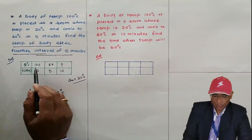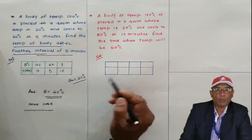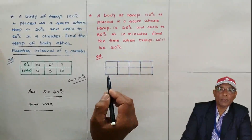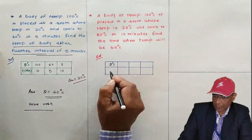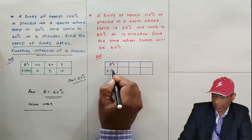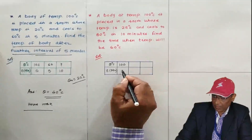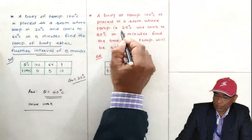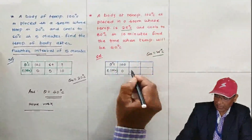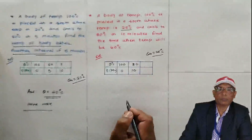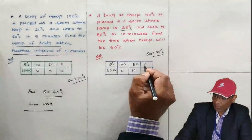This is essentially the same type of problem — in examinations, the numbers may change. In previous problems we found temperature; now in this next problem we are going to find the time. A body at temperature 100 degrees centigrade is placed in a room whose temperature is 25 degrees (θ₀ = 25°C). It cools to 80 degrees centigrade in 10 minutes. Find the time when the temperature will be 60 degrees centigrade.